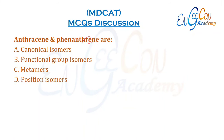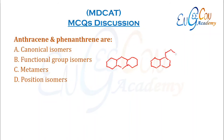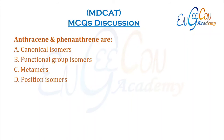Anthracene and phenanthrene basically have the same structures, both containing three benzene rings fused with each other. The only difference is the position of these rings. Due to the change in only the position of the rings, they are called positional isomers (also known as constitutional or structural isomers).